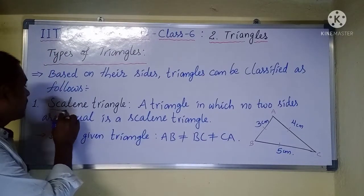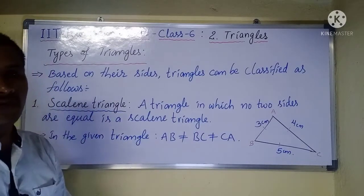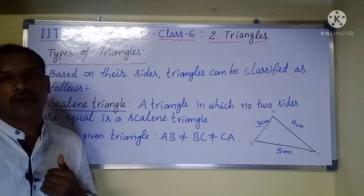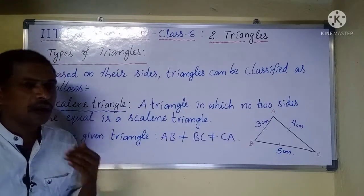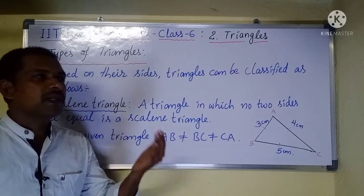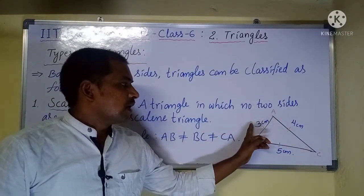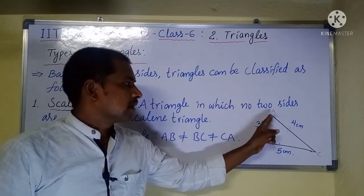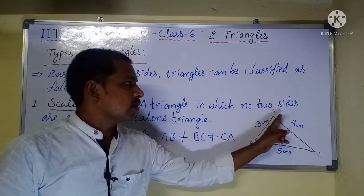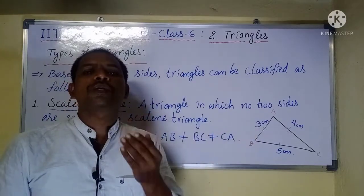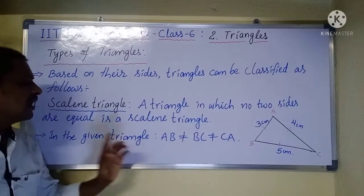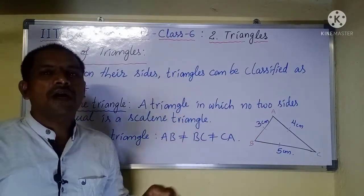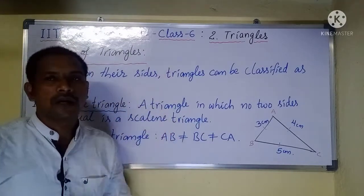The first type is a scalene triangle. A triangle in which no two sides are equal is called a scalene triangle. For example, in triangle ABC, AB is 3 centimeters, BC is 5 centimeters, and AC is 4 centimeters. No two sides are equal — AB is not equal to BC, and BC is not equal to CA. So this is called a scalene triangle.